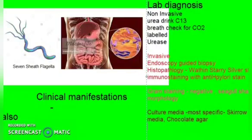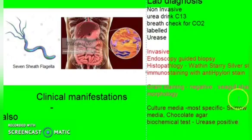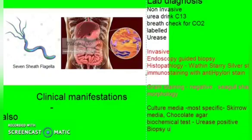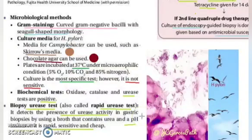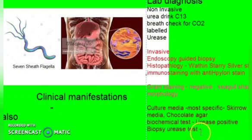Biochemical tests: urease will be positive. You can also do a biochemical test directly on the biopsy — this is called the biopsy urease test, also known as the rapid urease test. Using a pH indicator, you can find whether there is urease activity in the biopsy sample. It is a very good and cheap test.